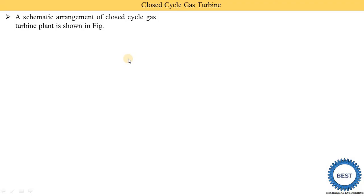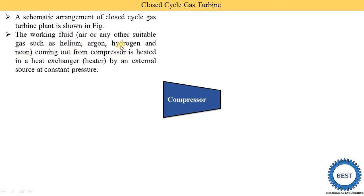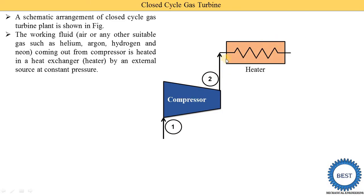The schematic arrangement of the closed cycle gas turbine plant is shown in this figure. The working fluid may be air or any other suitable gas such as helium, argon, hydrogen, or neon. This working fluid is supplied to the compressor, where its pressure is increased. An isentropic compression process is carried out in the compressor, then this working fluid is supplied to the heater, also called a heat exchanger, because heat is exchanged between two mediums — the working fluid and the combustion product.